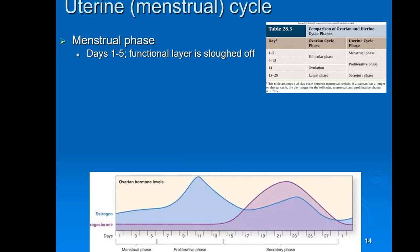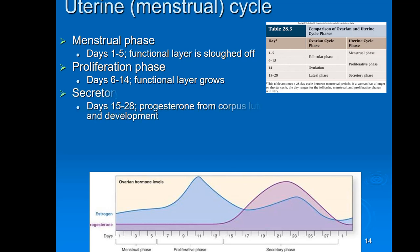Relating this to the menstrual cycle — still a 28-day cycle — there are three phases, slightly different from the ovarian cycle though they work closely together. The menstrual phase is when the functional layer of the endometrium is sloughed off, roughly the first five days. Then the proliferative phase, days 6 through 14, is when the functional layer grows back and gets thicker. Days 15 through 28 is the secretory phase, during which progesterone from the corpus luteum continues vascularizing and building up the functional layer.